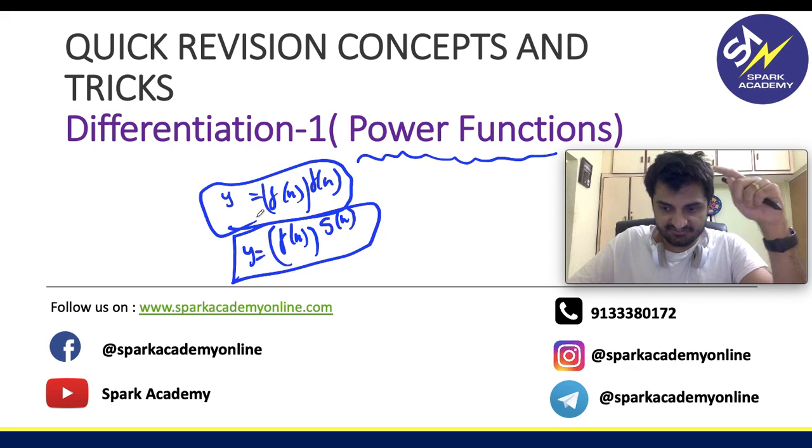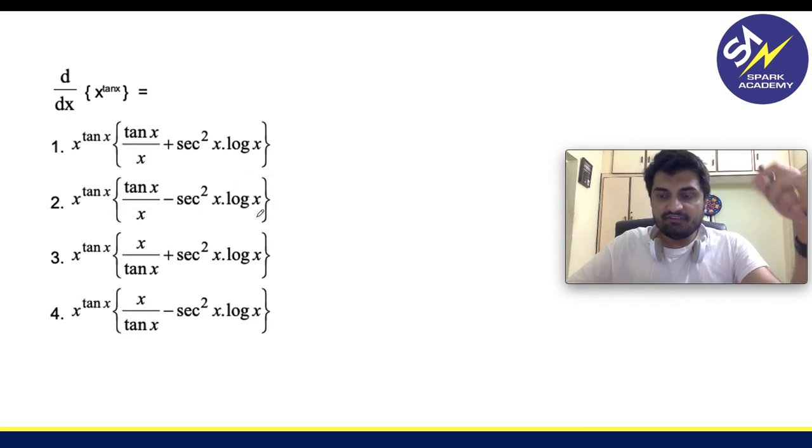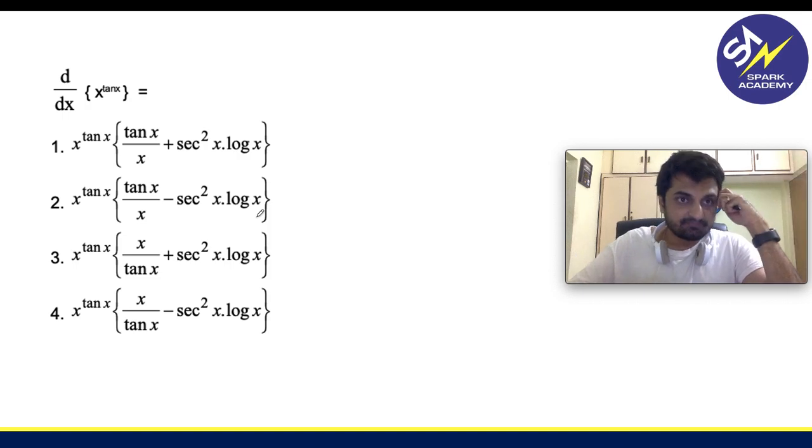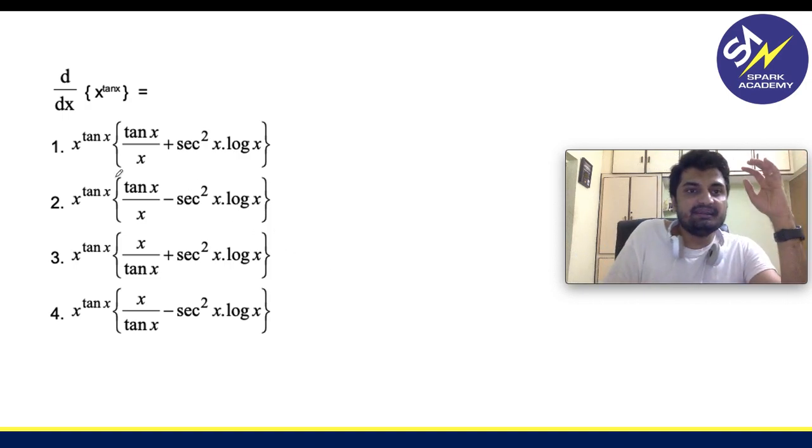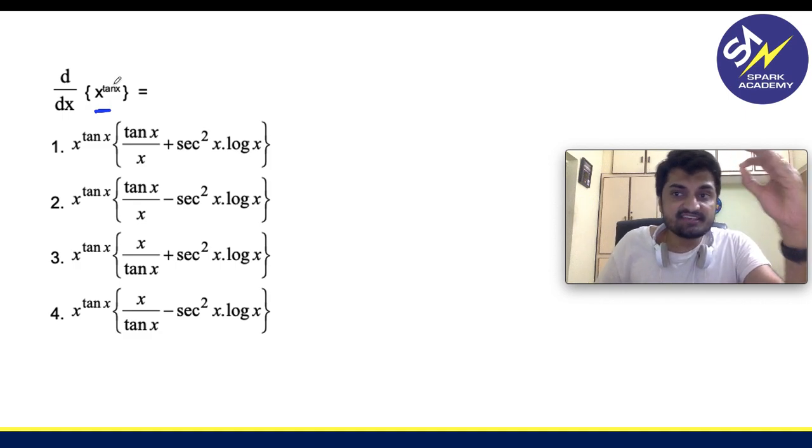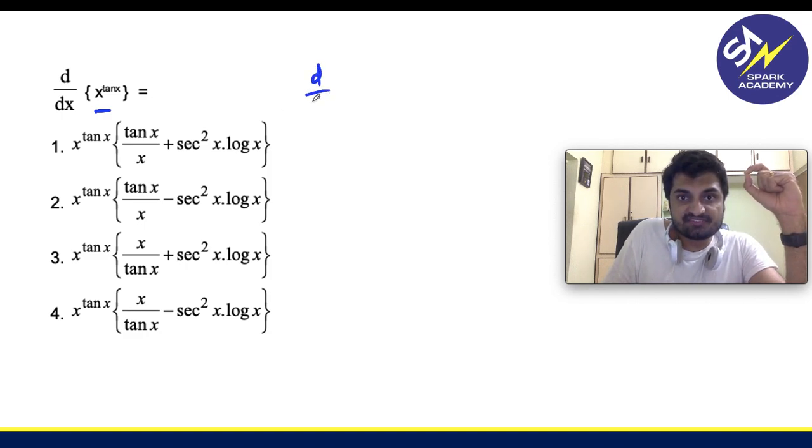Now let's get started with this. We will take a question which will help you understand the problem and the concept better. The question is d by dx of x power tan x. So this is a power function wherein the base and power are different. So this is basically something like d by dx of f of x power g of x.